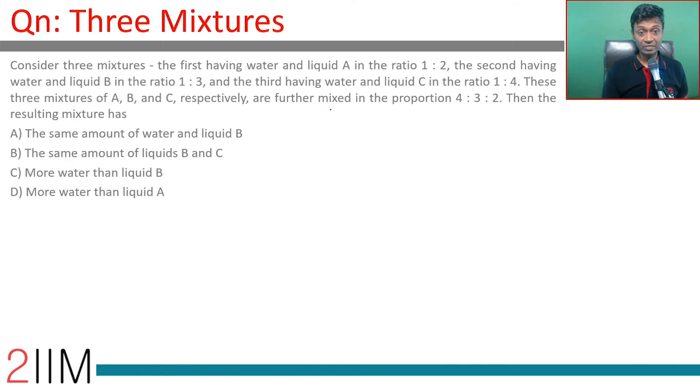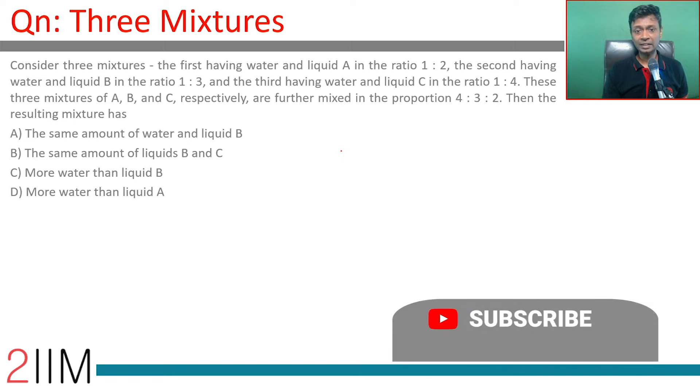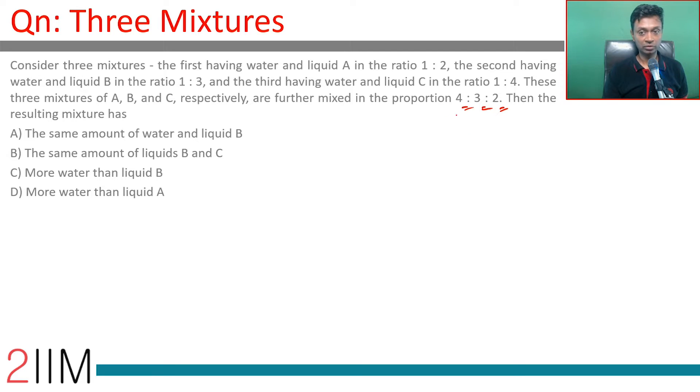Consider three mixtures - the first having water and liquid A in the ratio of 1 is to 2, the second having water and liquid B in the ratio of 1 is to 3, third having water and liquid C in the ratio of 1 is to 4. These three mixtures of A, B, and C are further mixed in the proportion 4 is to 3 is to 2.